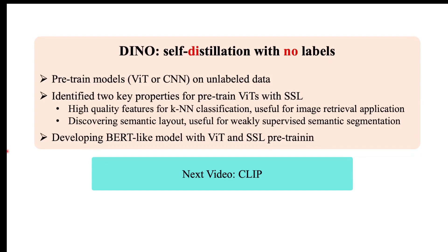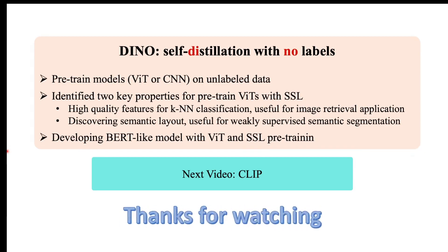That brings us to the end of this video. Pre-training ViT models with DINO, a self-supervised learning framework with knowledge distillation, yields two important emerging properties: highly informative features that work well in KNN classification, and features that contain rich semantic information. In the next video we will cover the CLIP model from OpenAI — stay tuned and thanks for watching.